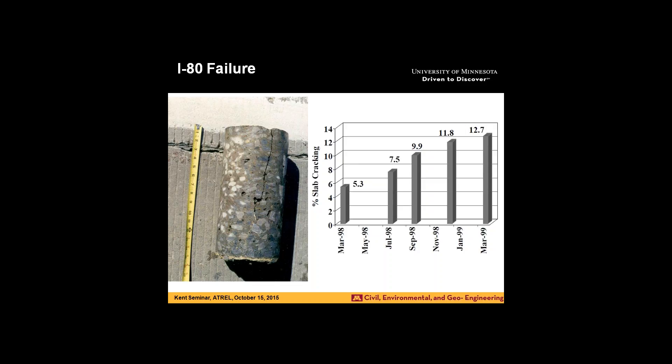Our mechanistic theory says that cracks should initiate at the bottom and propagate up. So 20 years ago, it was kind of a paradox. Our empirical design procedure told us this pavement should last 40 years — it lasted three. Our best mechanistic design procedure says stresses at the bottom are much higher than at the top. The pavement failed from the top.